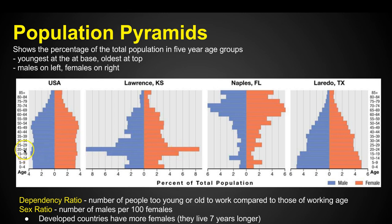There are late teens and early twenties on both sides of the pyramid. Where are we going to find late teens and early twenties? What is going on in Lawrence, Kansas? Well, there is a college in Lawrence, Kansas called the University of Kansas, and that's where people in this age group are going to school.